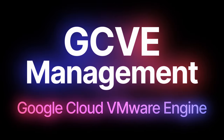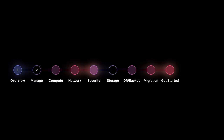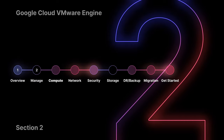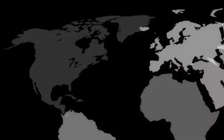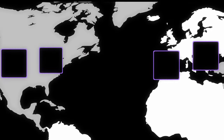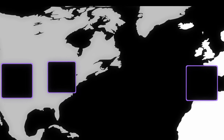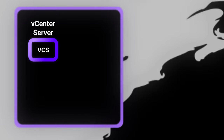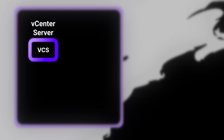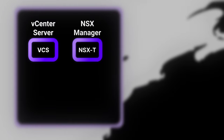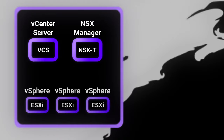Hi, I'm Jason Mears and this is a short overview of Google Cloud VMware Engine. GCVE is deployed inside something called the Private Cloud. You manage your Private Clouds through the Google Cloud console. Each Private Cloud has its own vCenter server in its own management domain, and all nodes in a given Private Cloud reside in the same Google Cloud region.